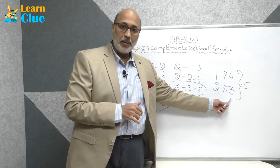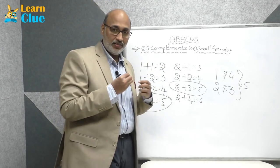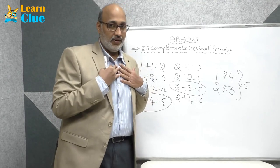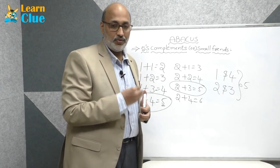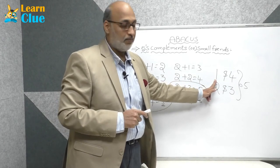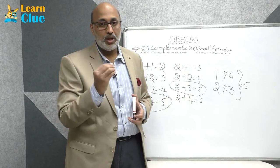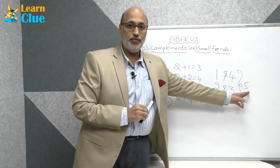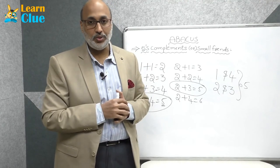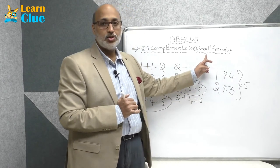One and four are best friends, and their common friend is five. Two and three are also best friends, and their common friend is five. Whenever you have a problem with any number, his friend is going to help. These friends work together with the support of their common friend to find a perfect solution. We also call this the small friends group.